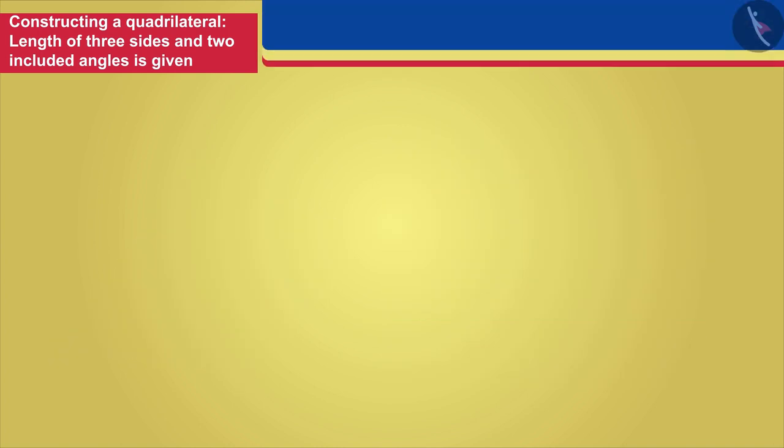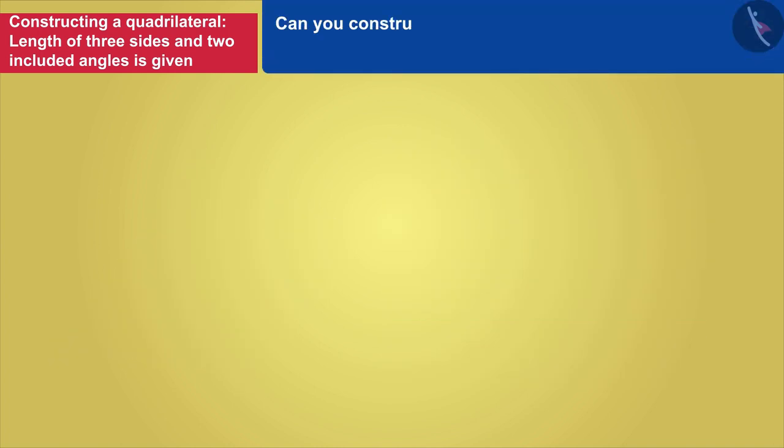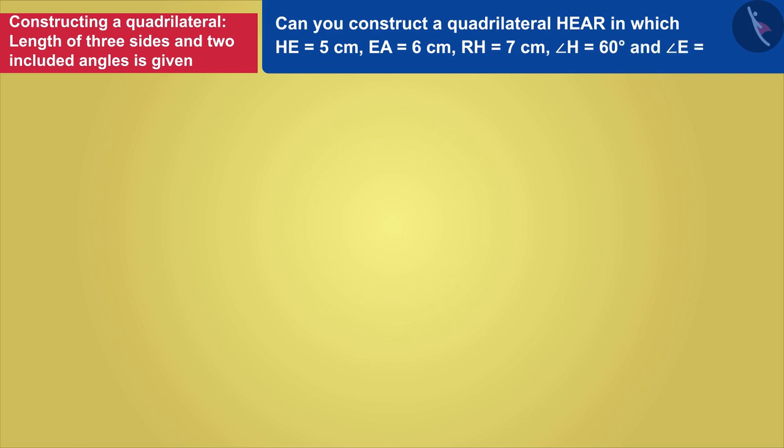Can you construct a quadrilateral HEAR in which HE equals 5 cm, EA is equal to 6 cm, RH equals 7 cm, angle H is 60 degrees and the value of angle E is given as 135 degrees?